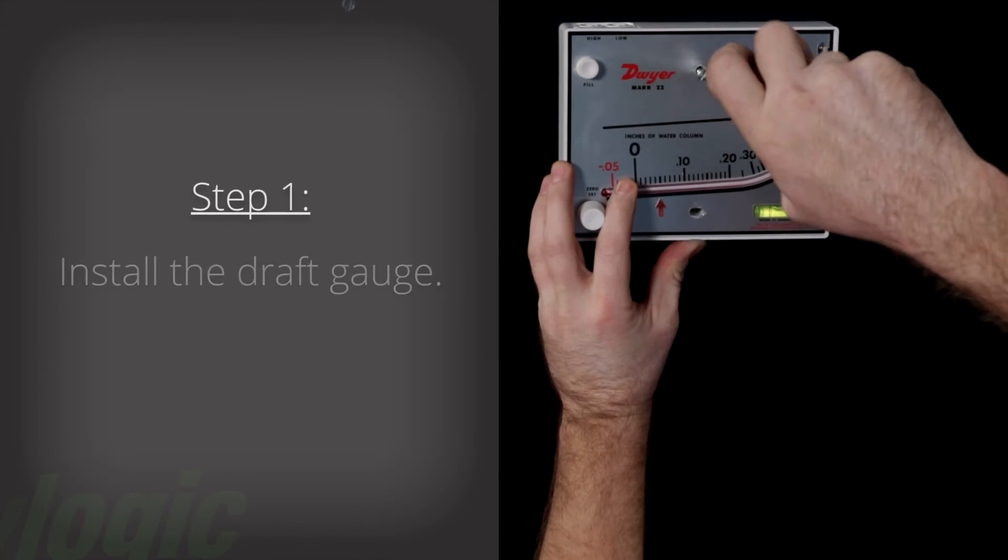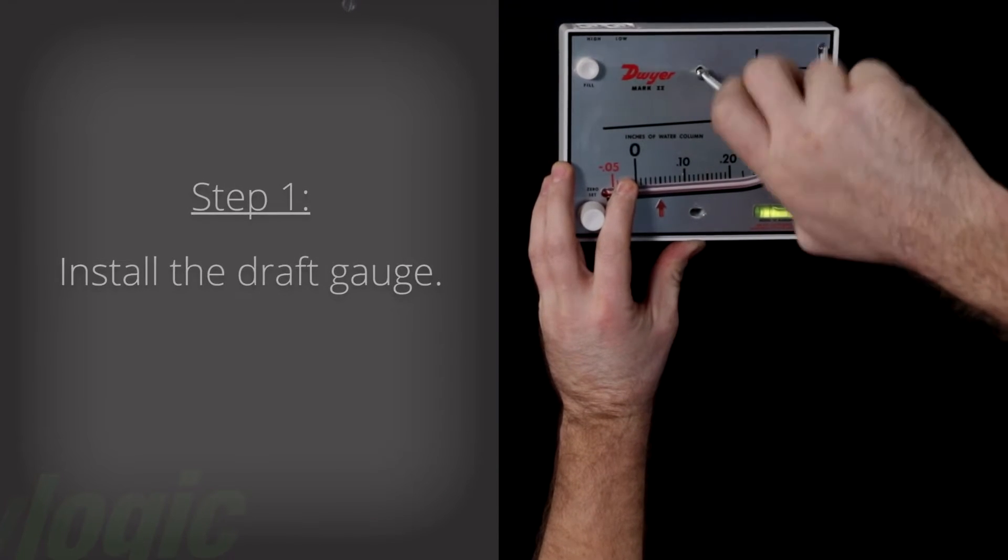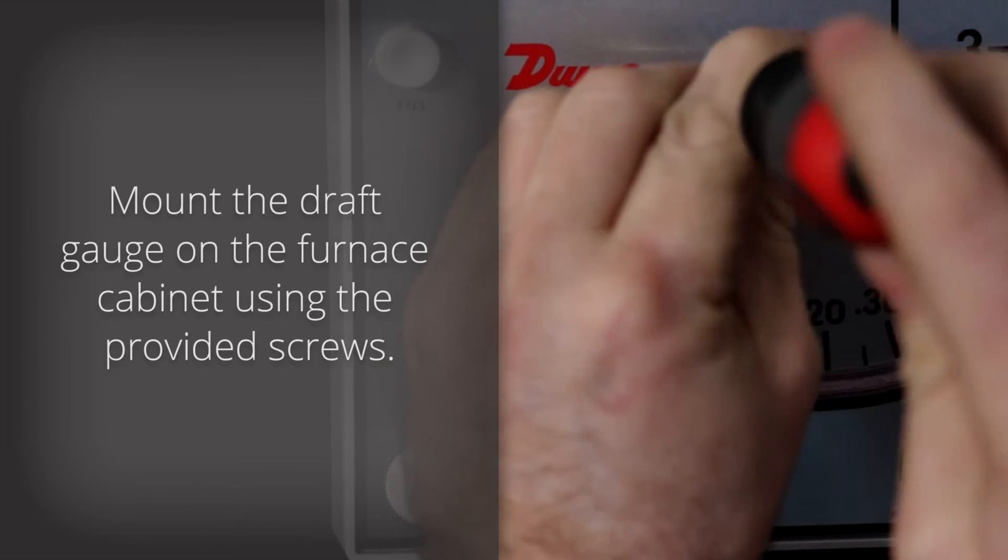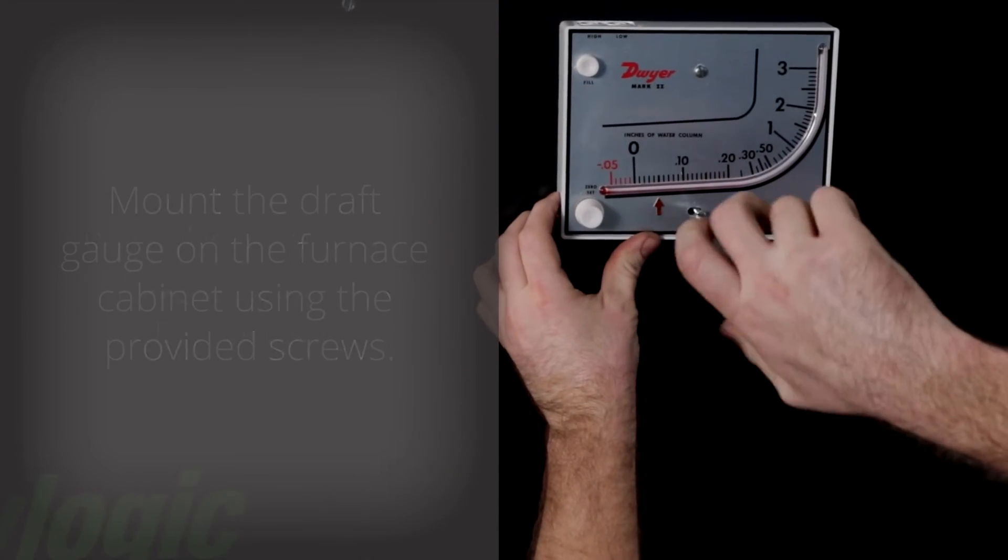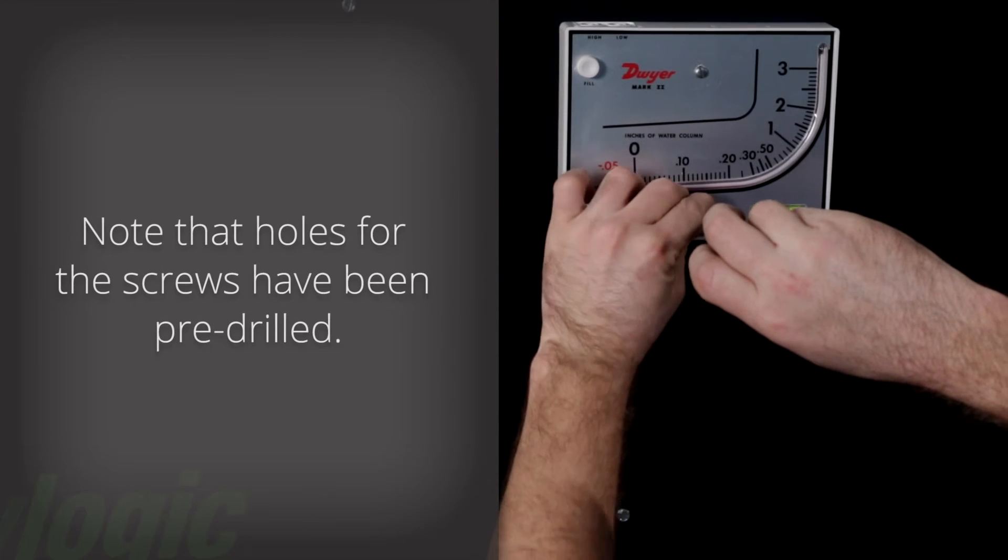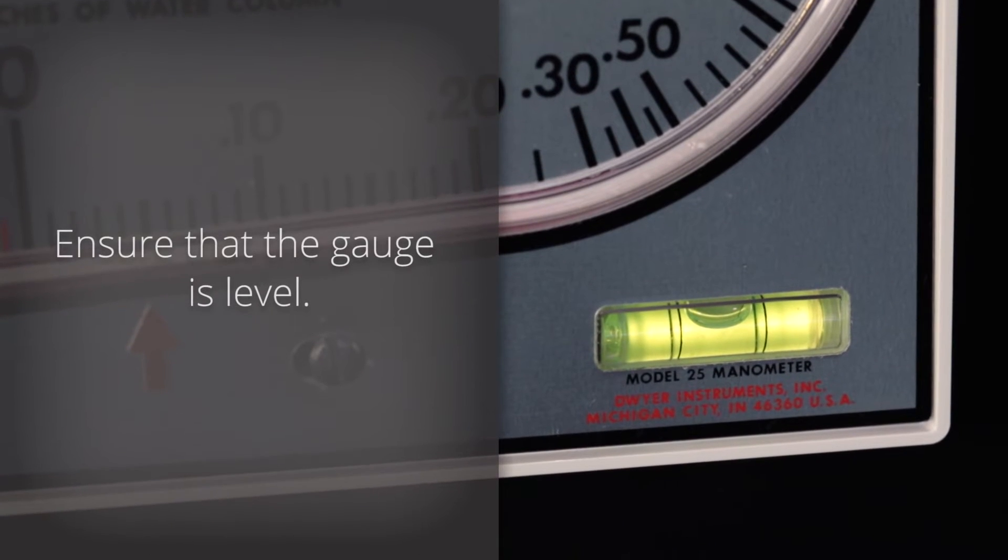Step 1. Install the draft gauge. Mount the draft gauge on the furnace cabinet near the flue using the two provided screws. Note that the holes are pre-drilled in the cabinet side panel. Make sure that the gauge is level.